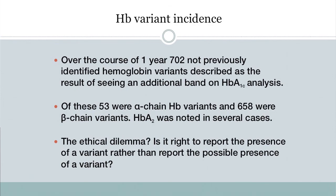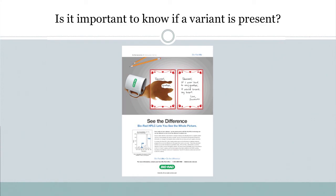Now here's an ethical dilemma: is it right to report the definitive presence of a variant rather than the possible presence? In Canada we are allowed to report the presence of a variant and identify it, though in other jurisdictions you may not be permitted to do so. On this point, I'd like to thank Bio-Rad for allowing me to use an old advertisement — partly because 'Snookums' was the name we gave our daughter when she was young, so we liked the ad.